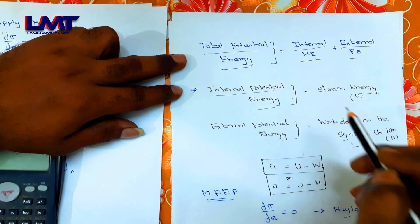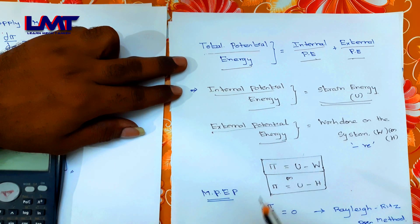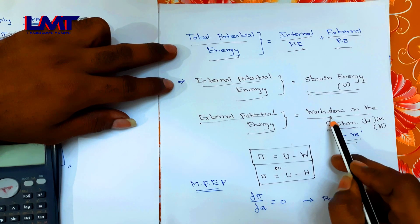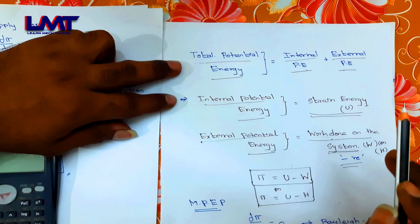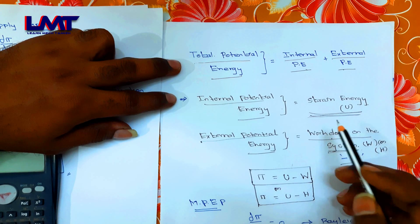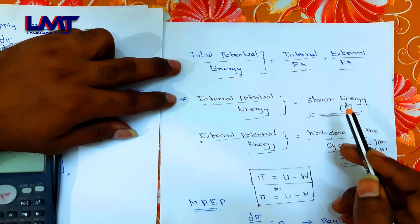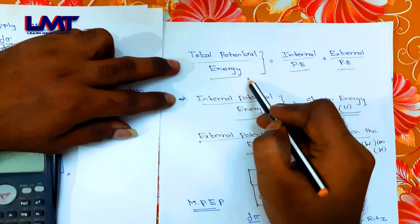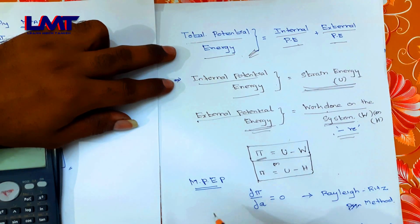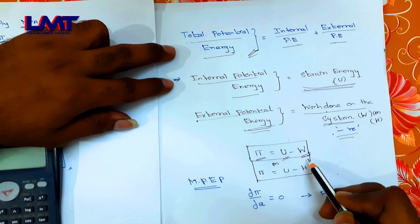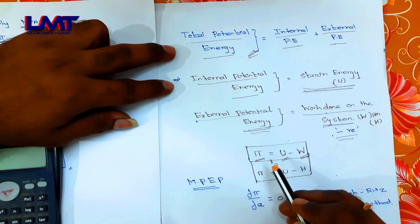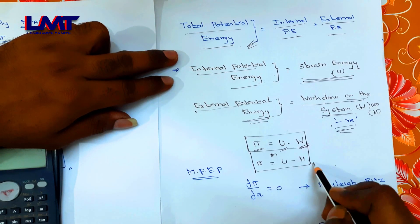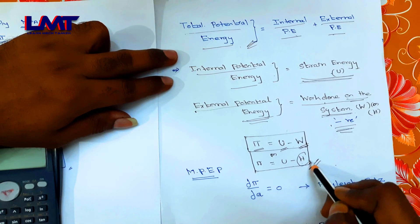Internal potential energy is nothing but strain energy. External potential energy is the work done — work done by the system and on the system. If you are at the bottom, there is strain energy in the body. The formula is: π (potential energy) = U (strain energy) − W (external work done). So π = U − W, where U is strain energy and W is external work done.